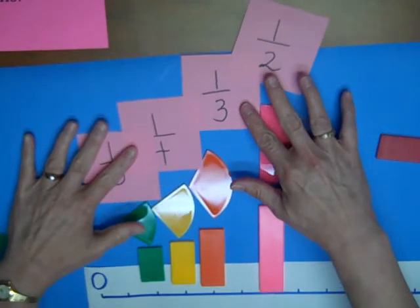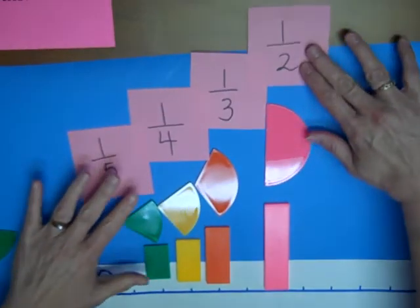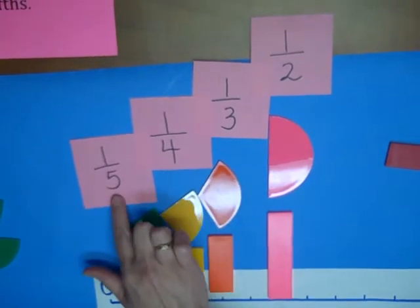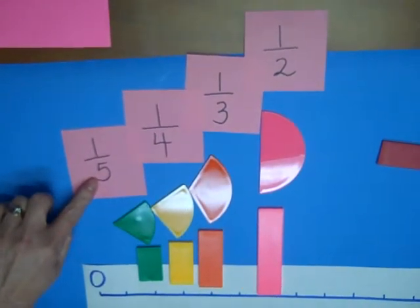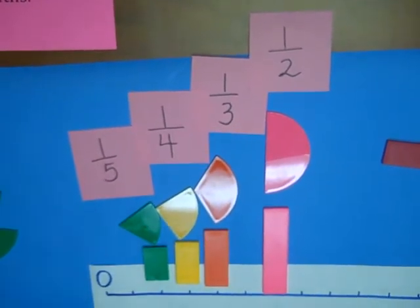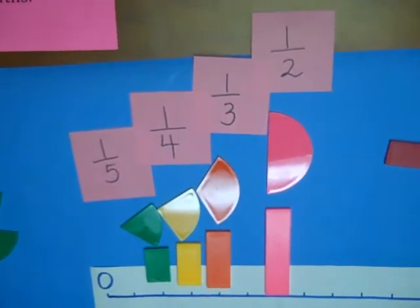Now, we can even just start looking at what's happening with the two parts. So, what's happening to our circles as our denominator, the bottom number, gets bigger. We're cutting them into more parts. What's happening to our fraction.